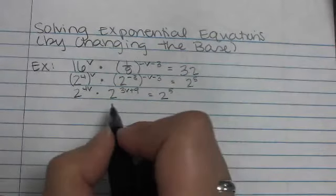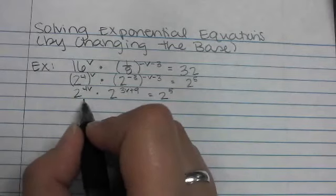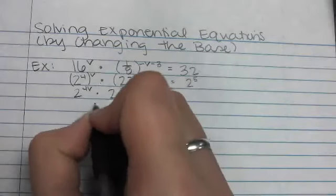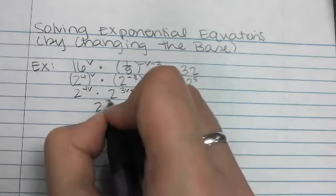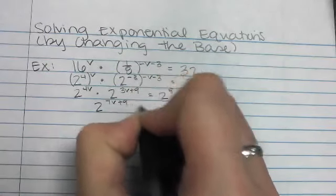And then if you guys recall, if I multiply two exponential expressions together, then I add the exponents. So 4v plus 3v makes 7v plus 9.